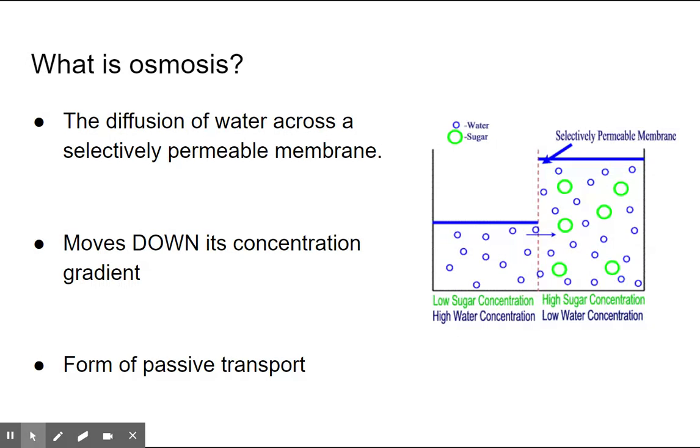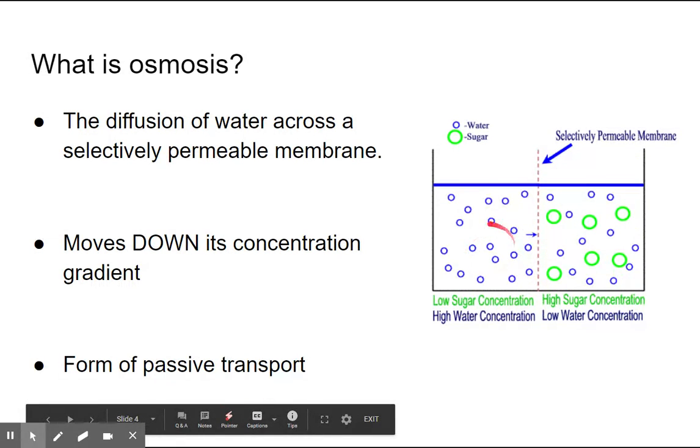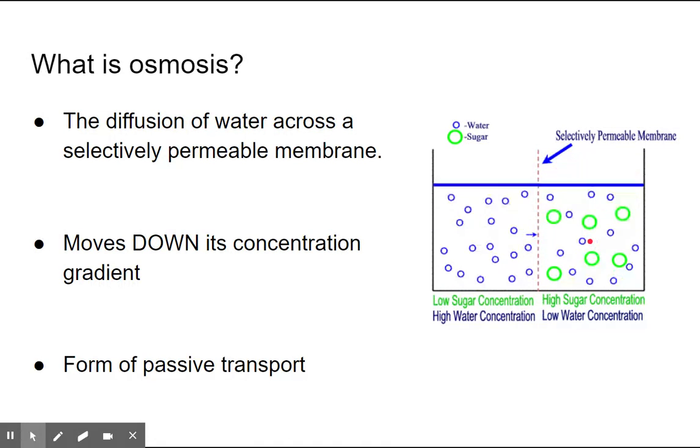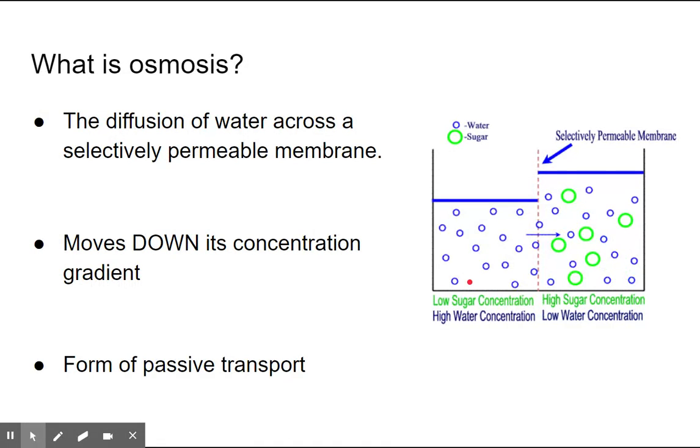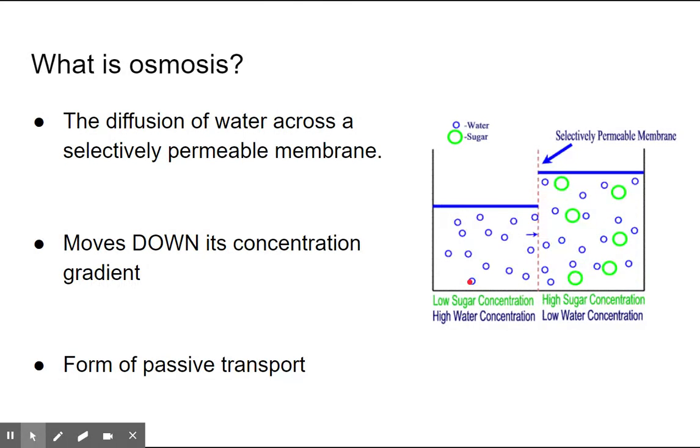We know osmosis is diffusion or movement of water from an area of high concentration to an area of low concentration. Here we can see it moving from where there's lots of water to where there's less water. We say it's going down its concentration gradient. It does not require any energy to do so, so that means it is a form of passive transport.